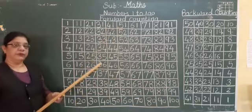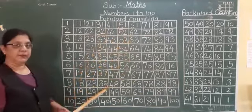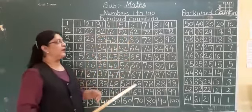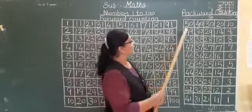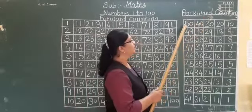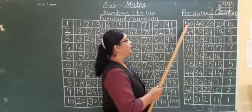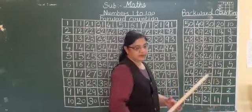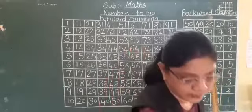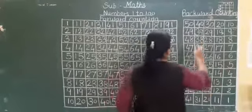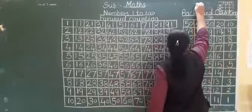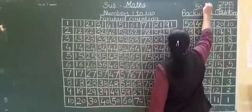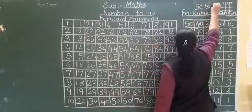This is for forward counting, 1 to 100 numbers. Now we will see the backward counting. See, backward counting, we will start 50 to 1. We will start 50 to 1, okay? See, backward counting, 50 to 1.